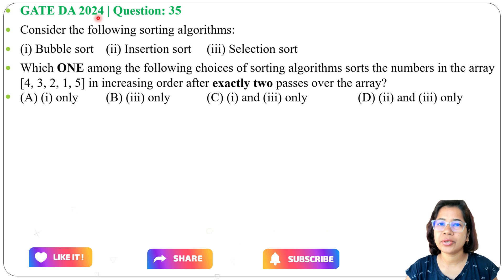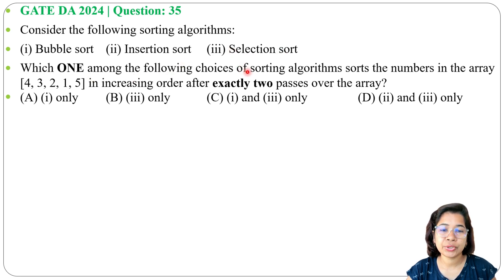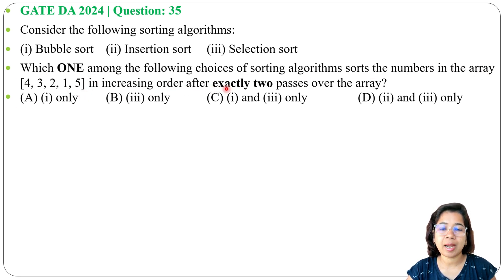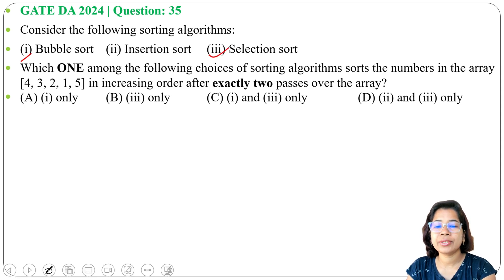Let's start with a previous question that was asked in GATE 2024, question number 35. Consider the following sorting algorithms: bubble sort, insertion sort, and selection sort. Which one among the following sorts the numbers in the array in increasing order after exactly 2 passes over the array? Four options are given.